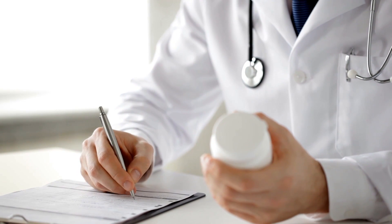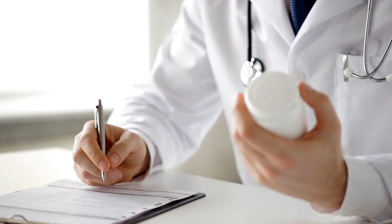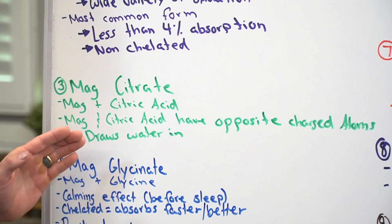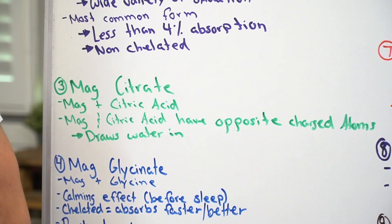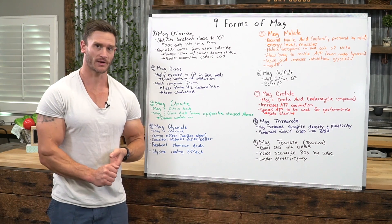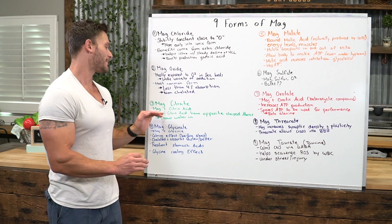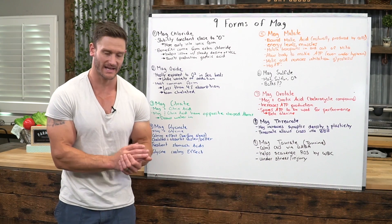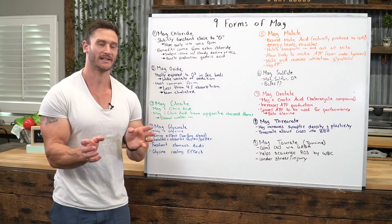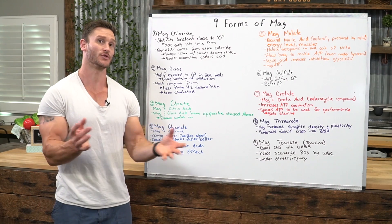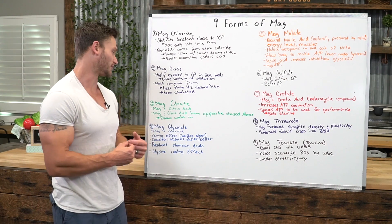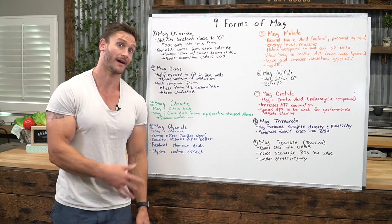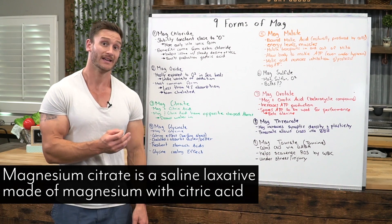Magnesium citrate is one your doctor may have had you take before a colonoscopy. Magnesium citrate is magnesium plus citric acid, and the way it works is pretty interesting. The magnesium and citric acid have opposite charged ions or atoms. What's happening is this creates a gradient where water — called passive diffusion — can come into the intestinal tract. So it draws water in, which is why it is so good when you need to clear out your intestinal tract, like if you're constipated.